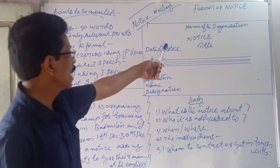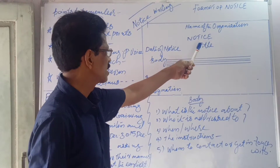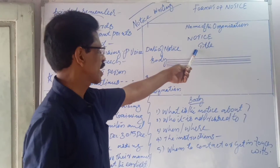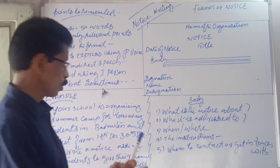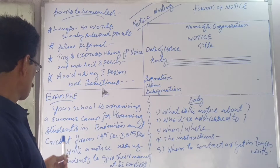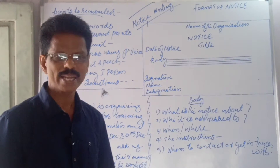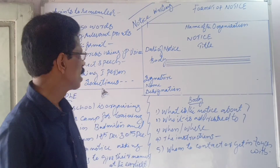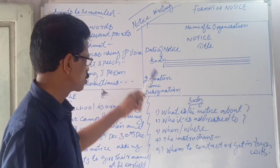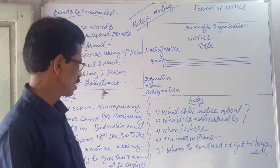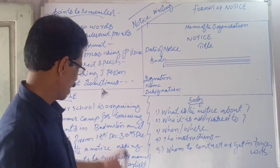See once again: name of the school or organization, then NOTICE in capital letters, then title — for example 'Summer Training Camp.' Don't give a very long heading — two or three words like 'Summer Training Camp' is enough. Then date, then body, then signature, name, and designation of whoever is issuing the notice. All these things are to be there in the notice.